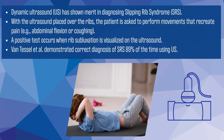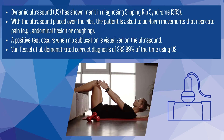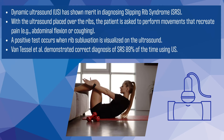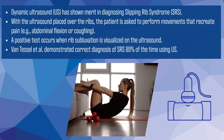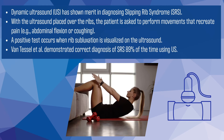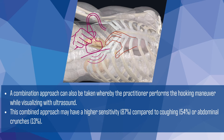Dynamic ultrasound is a promising diagnostic tool for identifying Slipping Rib Syndrome. The ultrasound probe is placed over the ribs while the patient performs movements that elicit pain, such as abdominal flexion or coughing. A positive result is indicated by the visualization of rib subluxation. Research by Ventes Letal showcased the efficacy of dynamic ultrasound, achieving a correct diagnosis of SRS in 89% of cases. A combined approach — the hooking maneuver performed while visualizing with ultrasound — may have higher sensitivity at 87%, compared to coughing at 54% or abdominal crunches at 13%.